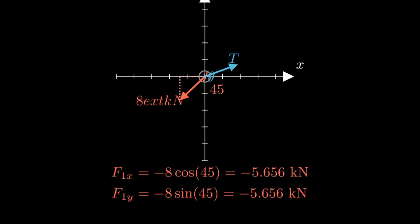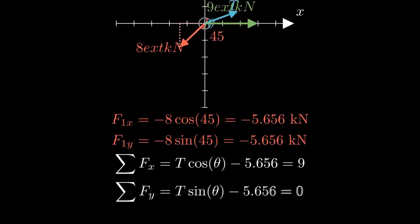Now we know that the resultant force must be 9 kN in the positive x direction. This means that when we add up our forces we need 9 kN in x, and zero net force in y to maintain equilibrium.